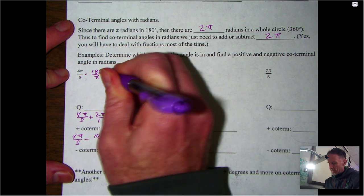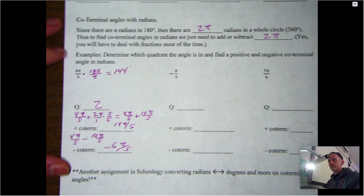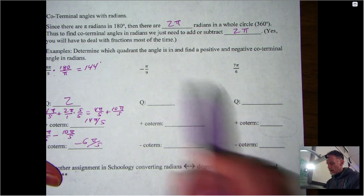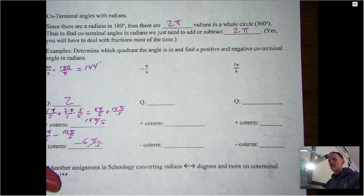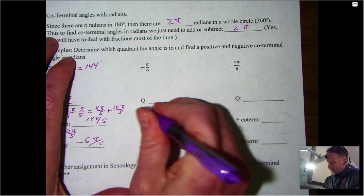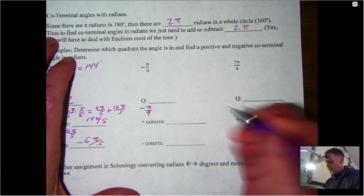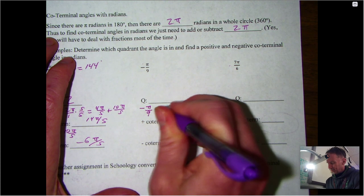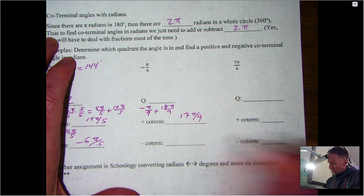One last time: if you want to pause the video and find your co-terminal angles for these two angles and find the quadrants, I'll go through the answers here in just a second. For the co-terminal, we're adding or subtracting 2π, which if my denominator is 9, 2π is equal to 18π over 9. So that's 17π over 9, and if I subtract it, that gives me -19π over 9.